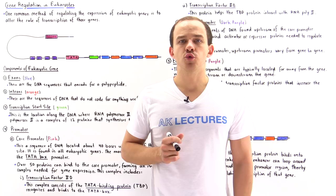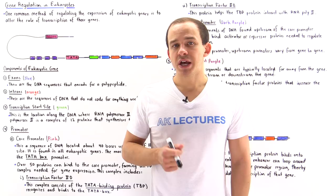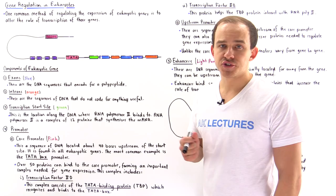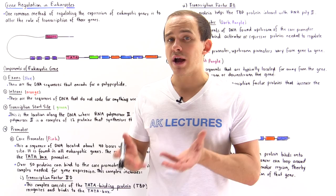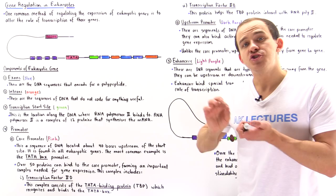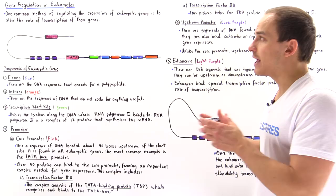In prokaryotic cells, such as bacterial cells, operons are used to regulate gene expression. In eukaryotic organisms, because eukaryotic cells are so much more complex than prokaryotic cells, the method by which genes are regulated is much more complex than in prokaryotic organisms. There are many different levels at which gene regulation and gene expression can actually take place.